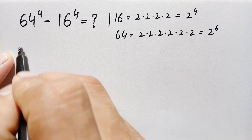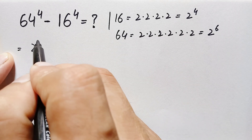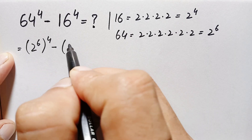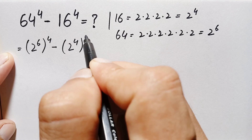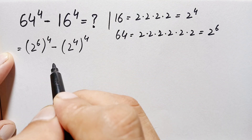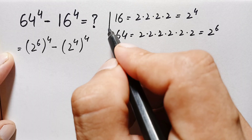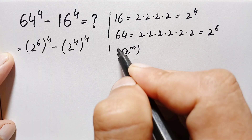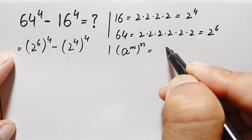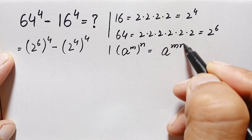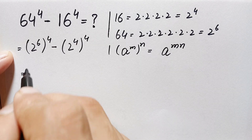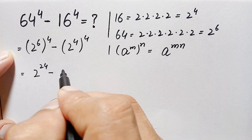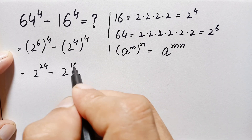So we replace the two bases: 64 is 2 raised to power 6, whole raised to power 4, minus 16 is 2 raised to power 4, whole raised to power 4. In both terms we apply the exponential identity: a raised to power m, all raised to power n, equals a raised to power m times n. This gives us 2 raised to power 24 minus 2 raised to power 16.